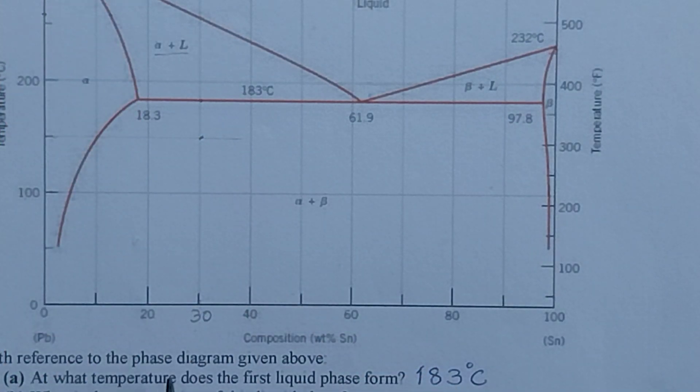So they say with reference to the phase diagram given above, at what temperature does the first liquid phase form? We note that when the heating is taking place, increasing the temperature will let the temperature hit 183 degrees Celsius. This is the eutectic temperature and at eutectic temperature the first liquid that starts melting out will have a eutectic composition. So the temperature as they say at what temperature, it is 183 degrees Celsius.